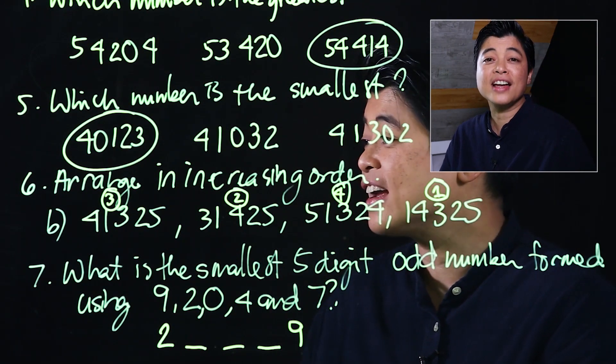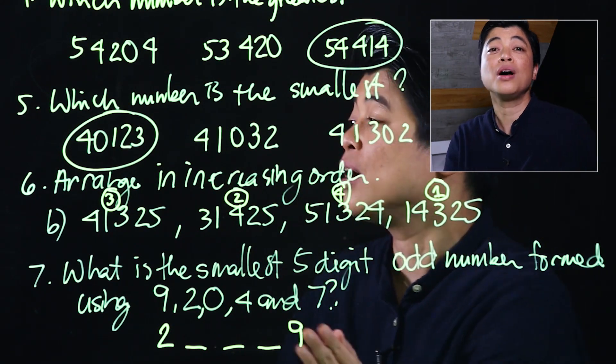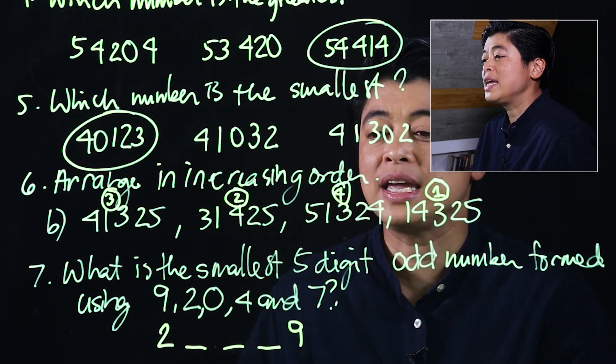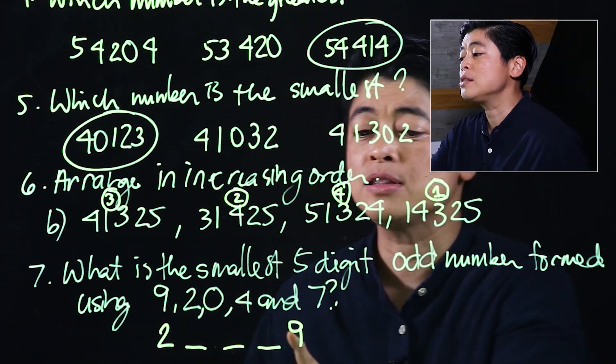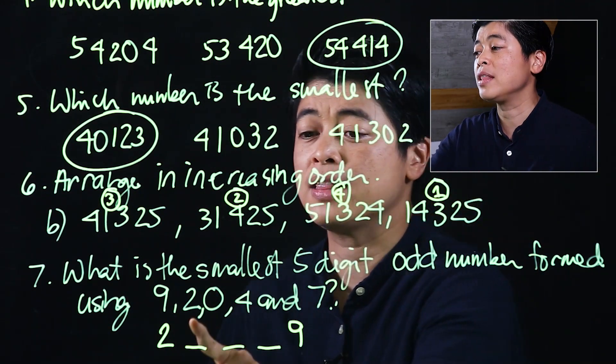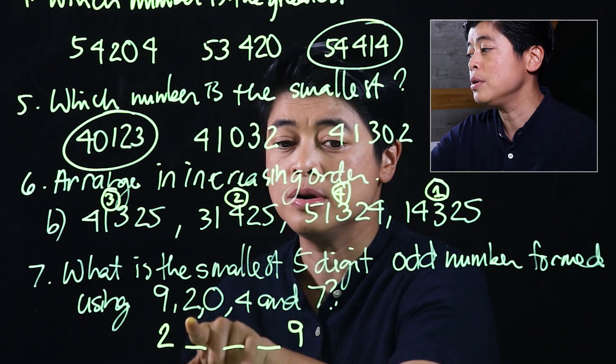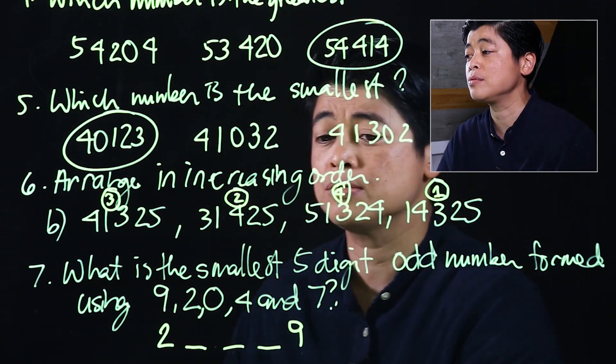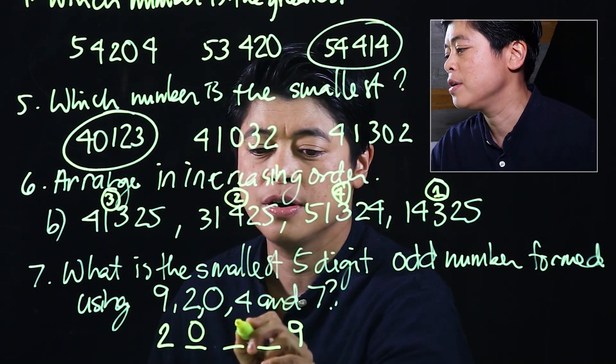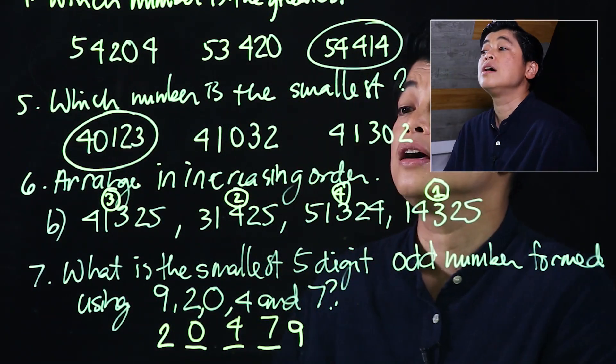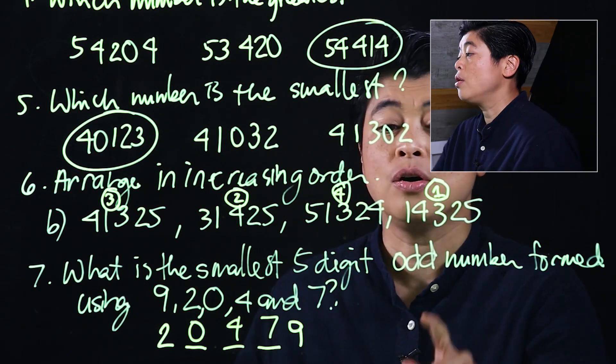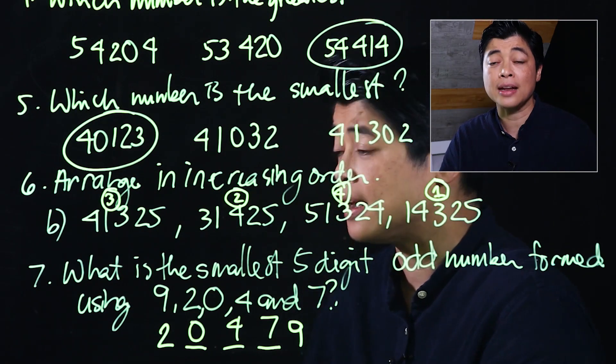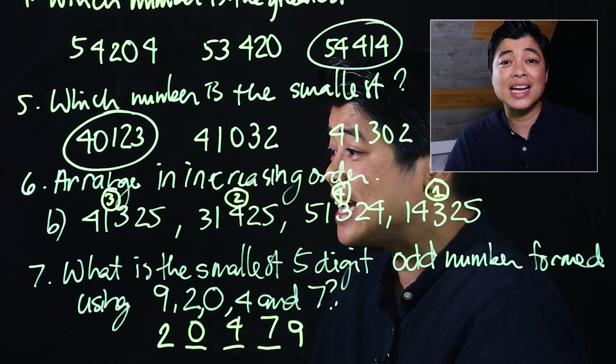The rationale there is if we want the smallest, the smaller numbers should be saved for the earlier place values. Since I've used the 2 and the 9, I'm left with the 0, the 4, and the 7. Arranged from smallest to largest would be 0, 4, 7, making the smallest five-digit odd number to be 20,479.